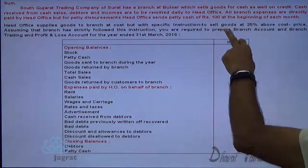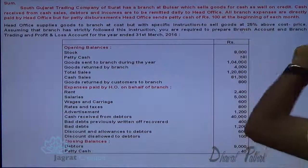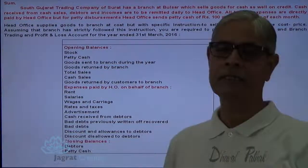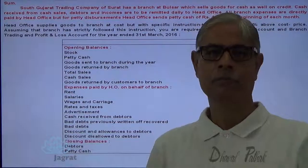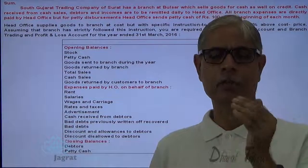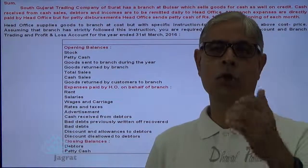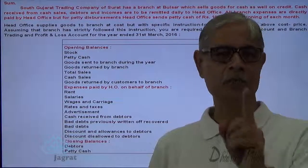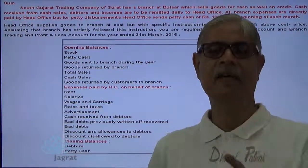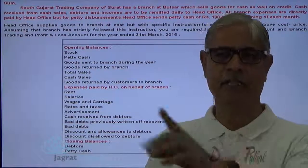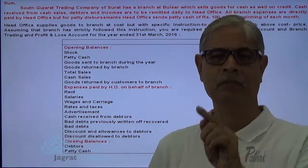Head office supplies goods to the branch at cost, with a specific instruction to sell goods at 25 percent above the cost price. Goods are sent at cost with a specific instruction to sell them 25 percent above cost. This is a sum wherein instruction is given to the branch to sell goods at 25 percent profit on cost — this is not a sum on invoice price.